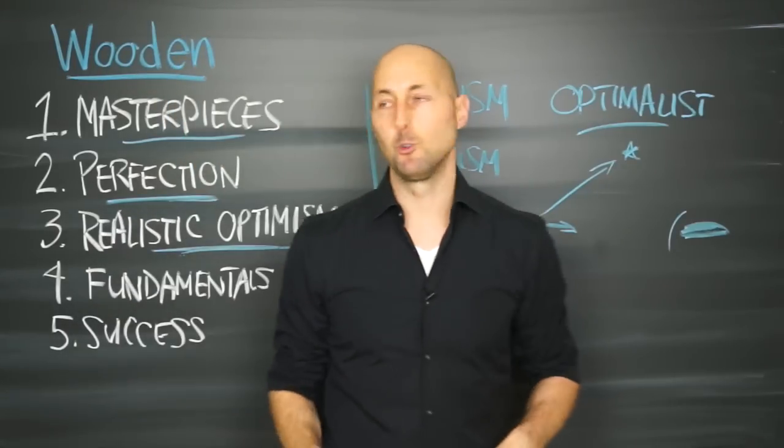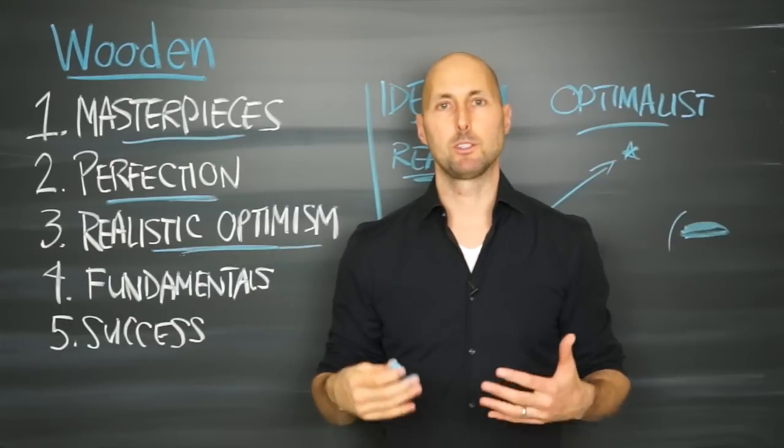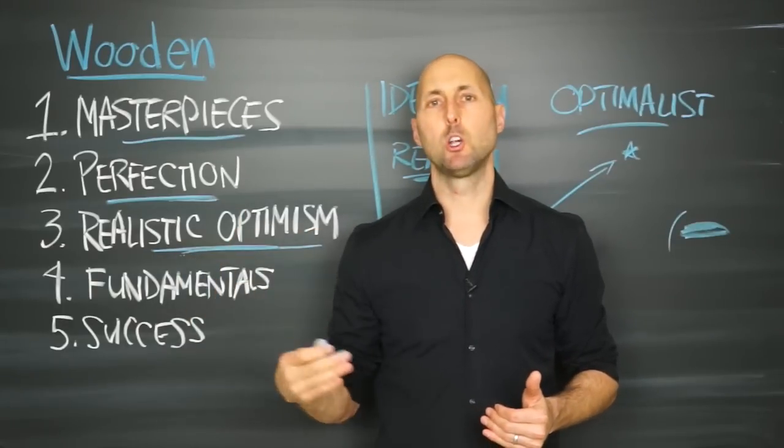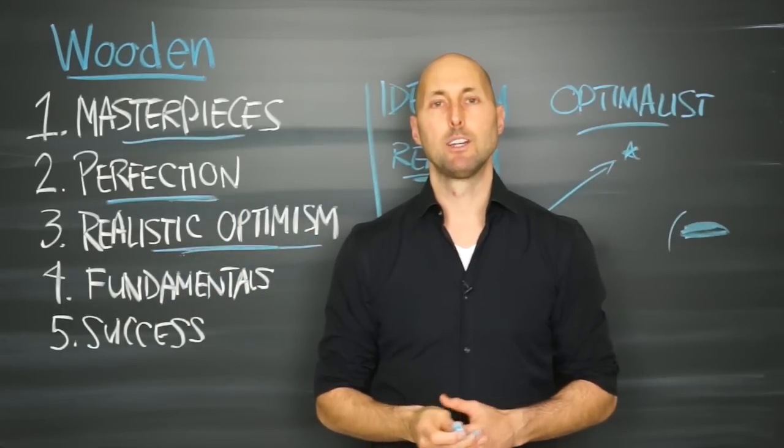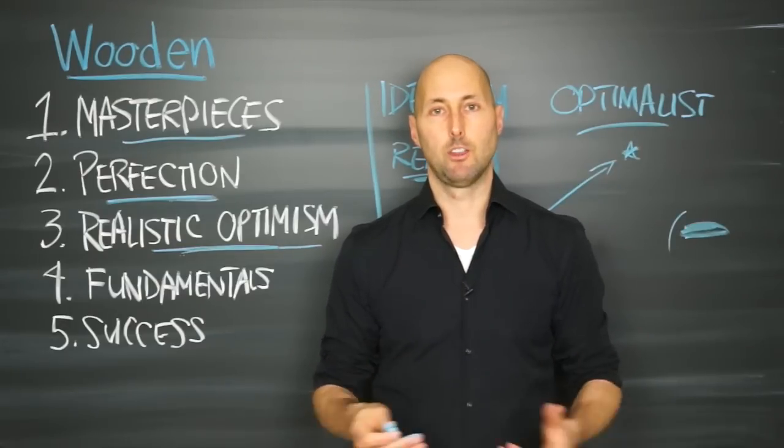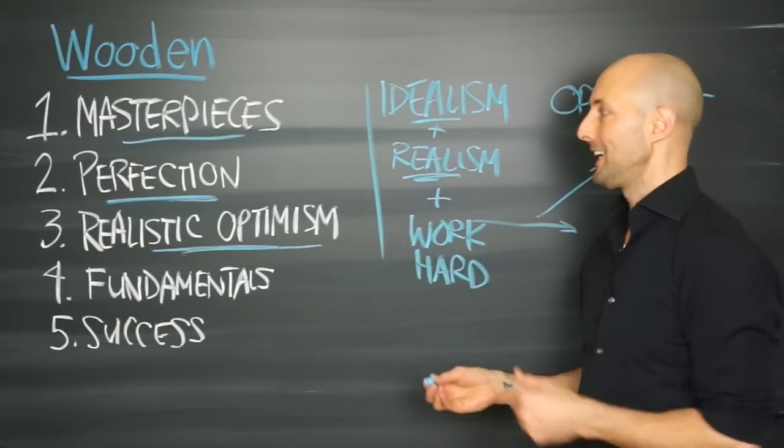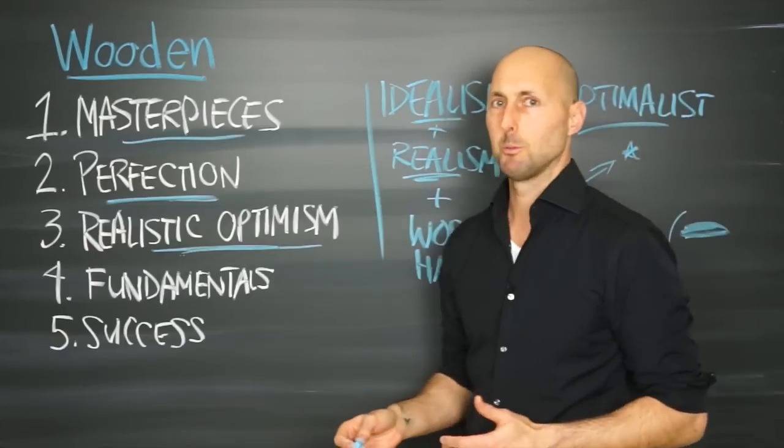Those are the three components to his realistic optimism. It's functional optimism. We've been talking about that. You believe that you can create whatever you want to create in your life, because you know you're going to put in the effort it takes to achieve those goals. Idealism plus realism plus hard work equals realistic optimism. Super big idea.